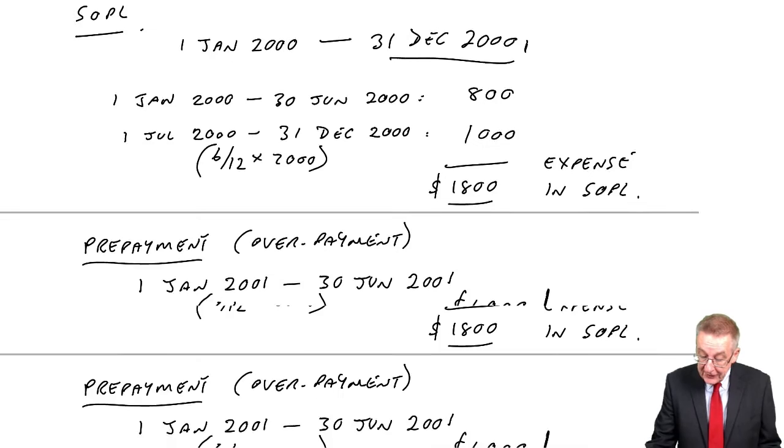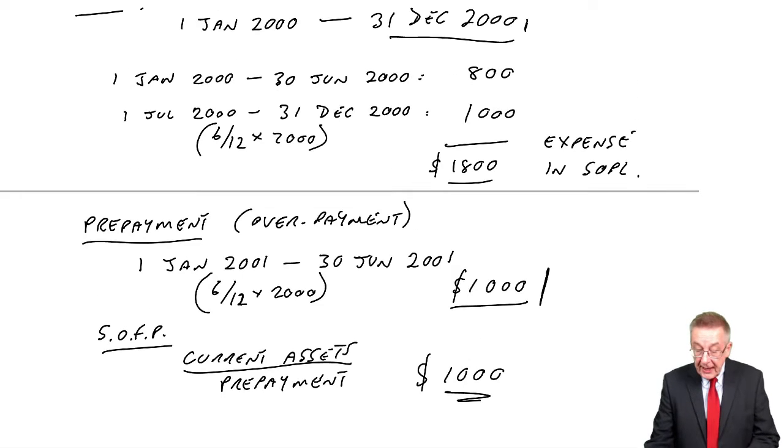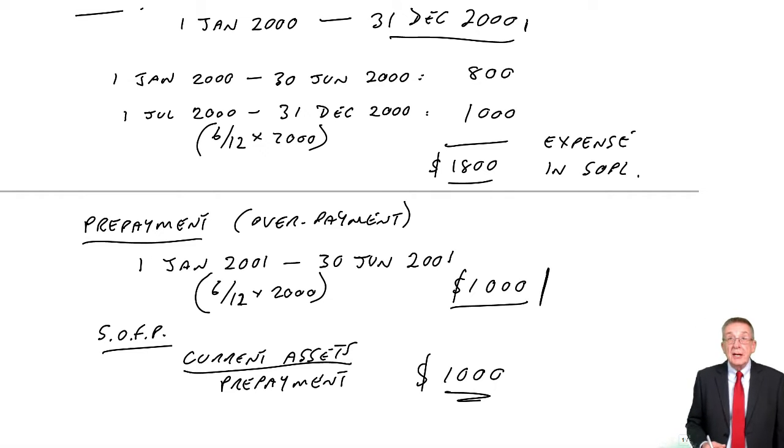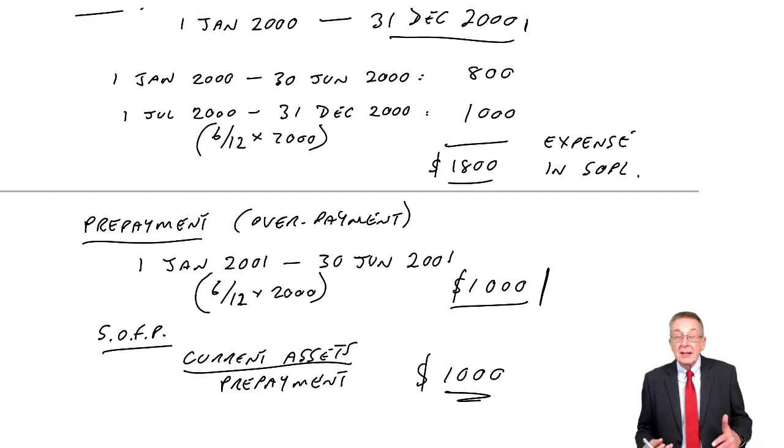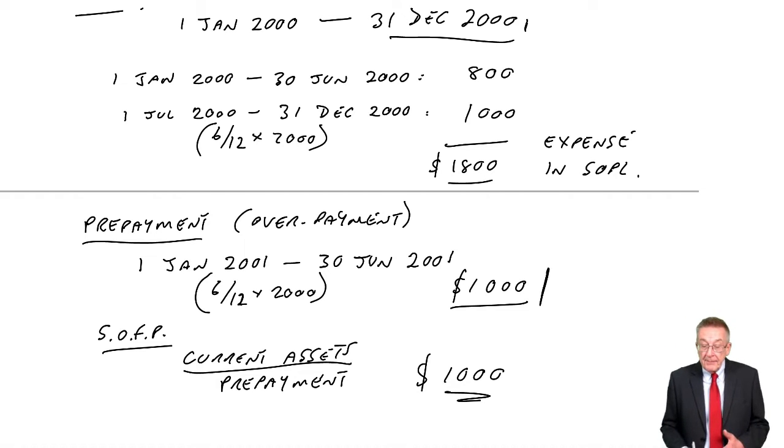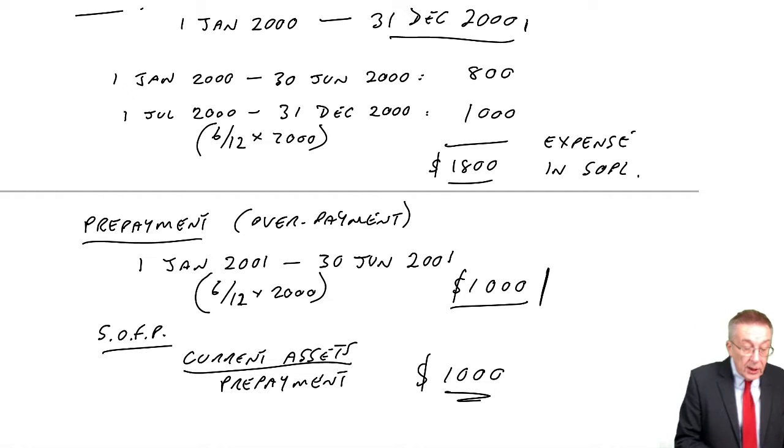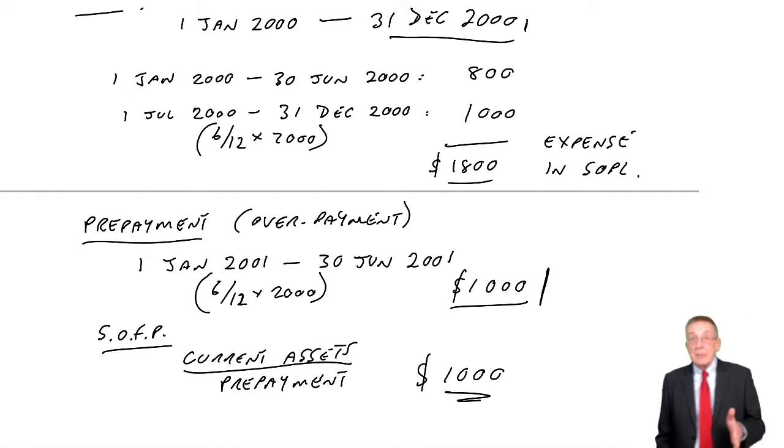In the last lecture on this chapter of Accruals and Prepayments, we looked at prepayments in Example 1. I'm not going to repeat everything now, but we worked out the expense and the prepayment for Karen.